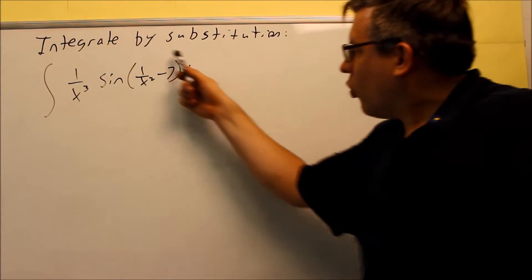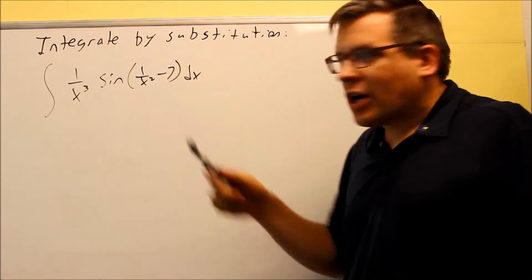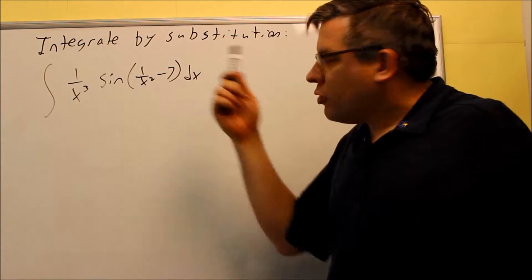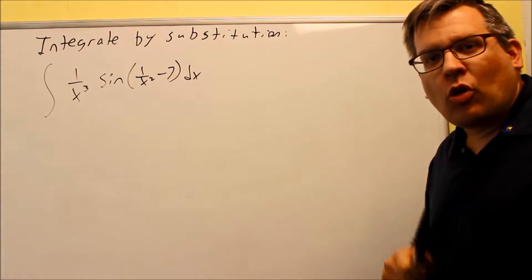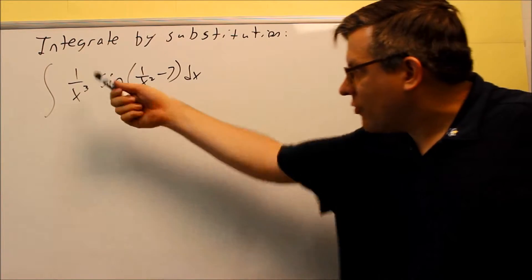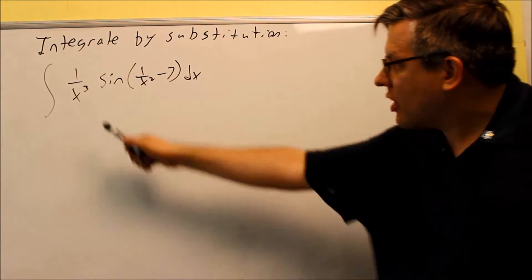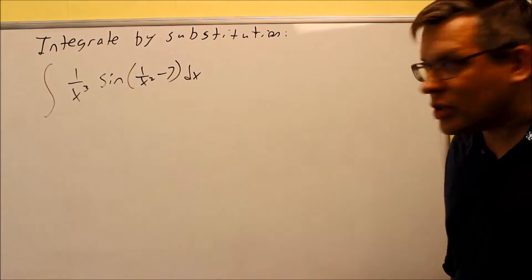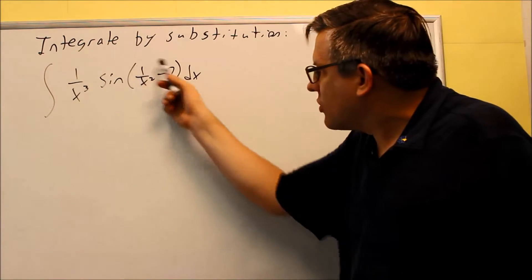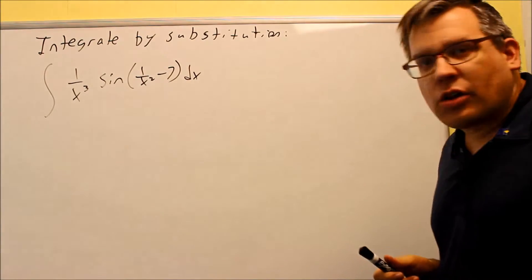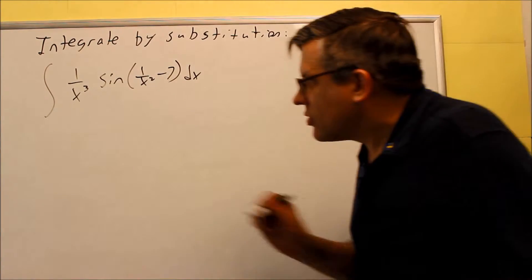For this one, we're going to let u equal the inside part. So you might be thinking, well don't I normally have to pick the higher power for u? Well that's true, but that's if you have positive powers. In this case you actually have x to the negative 3, and this is x to the negative 2. So actually this one is the larger power when you consider negative exponents.